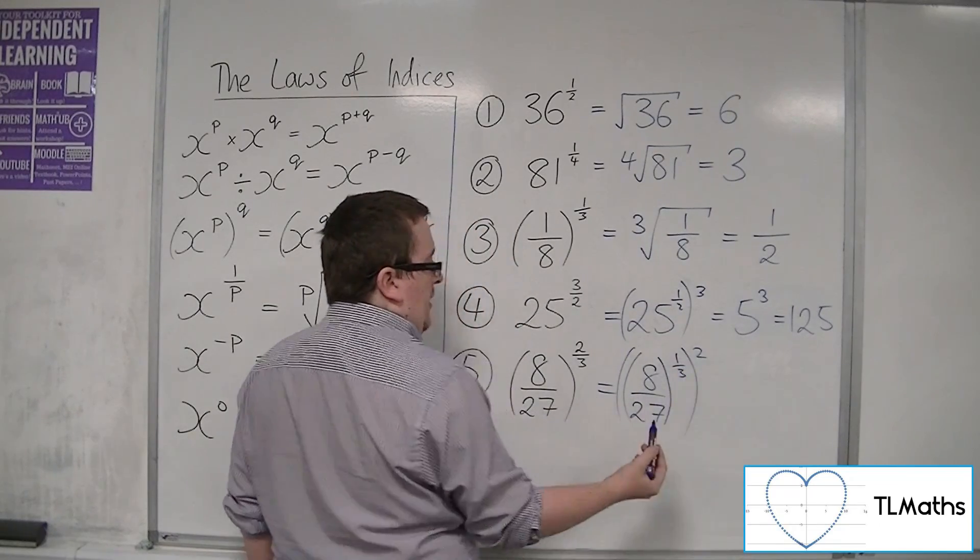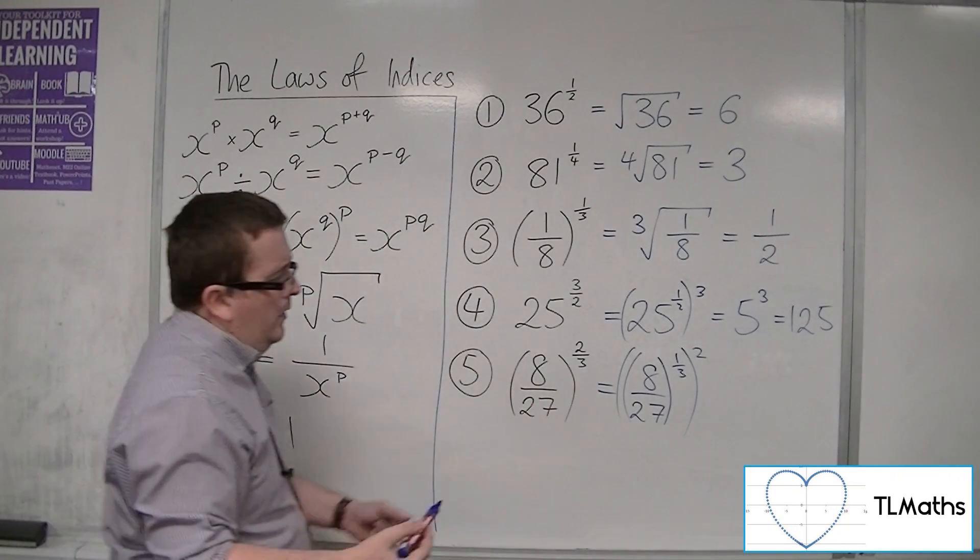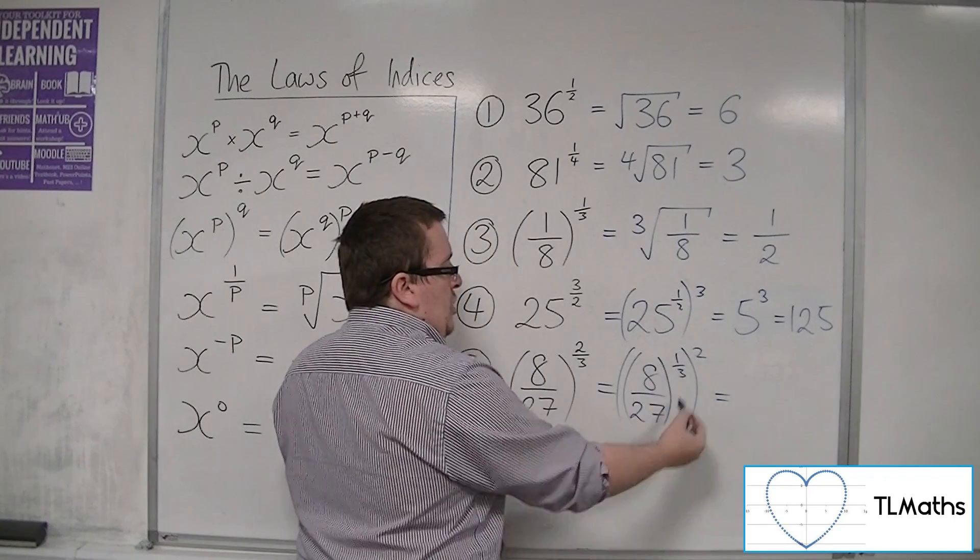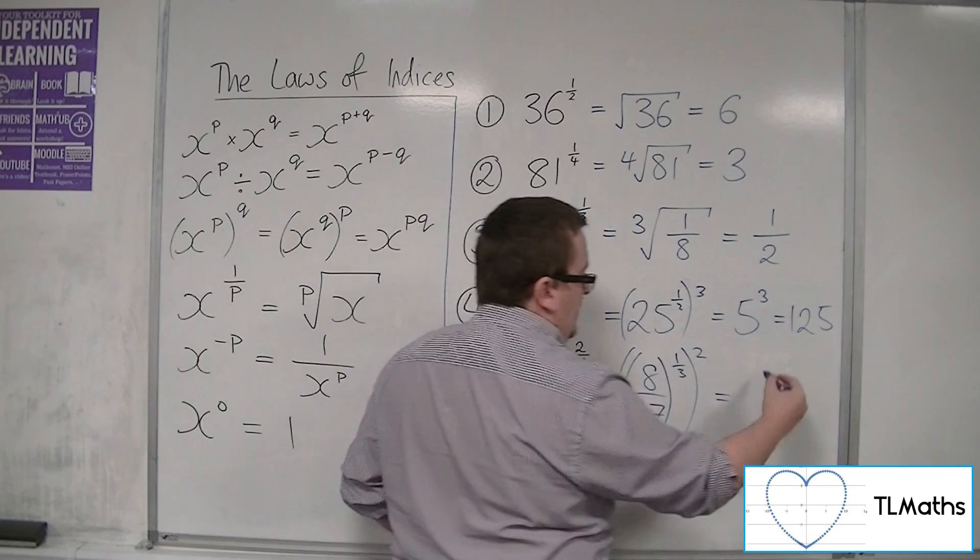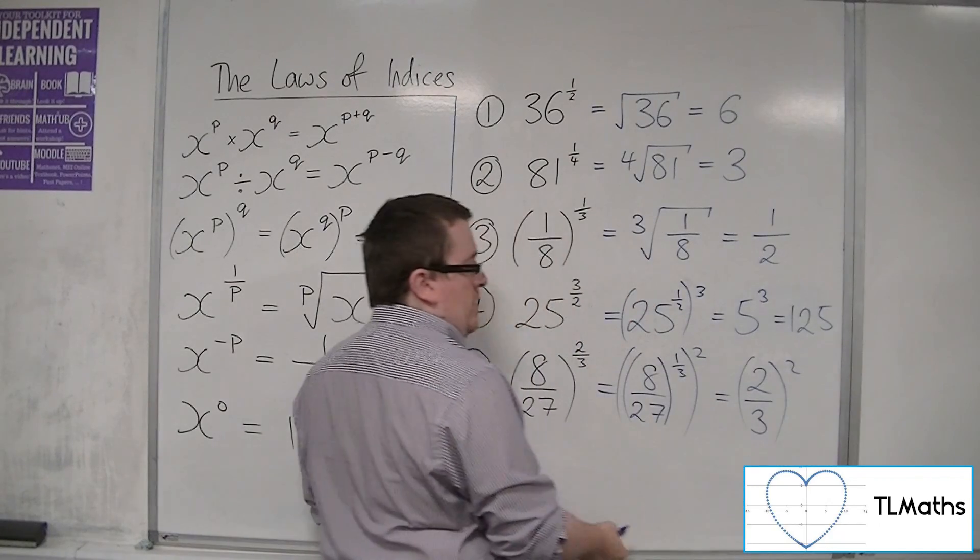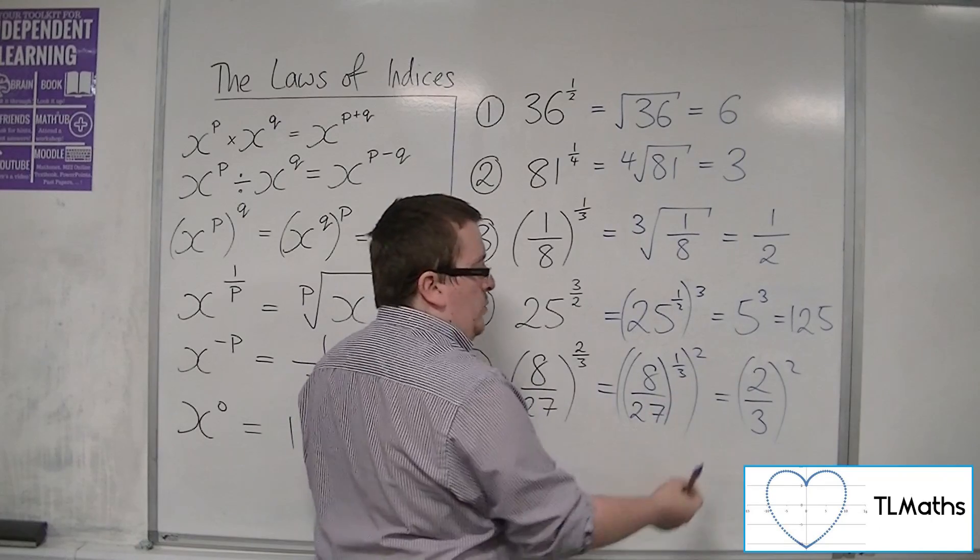So a third times 2. So if I cube root the numerator and the denominator, I'm going to get 2 over 3, and I still have to square it.